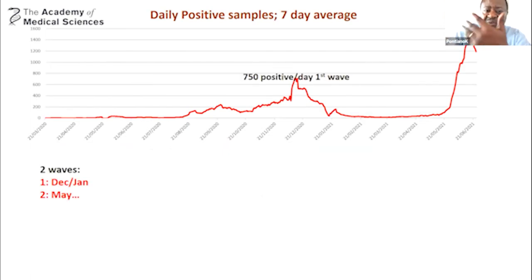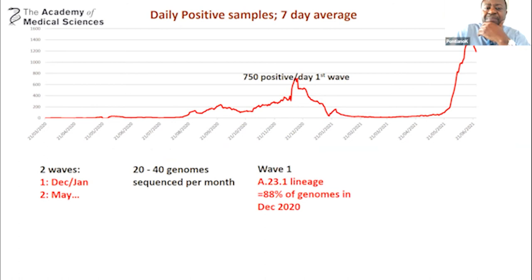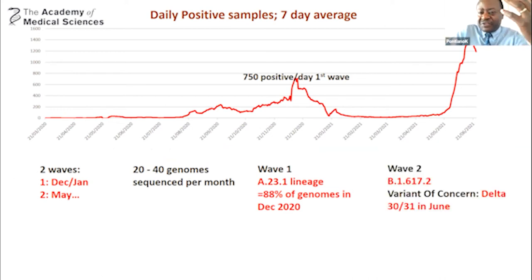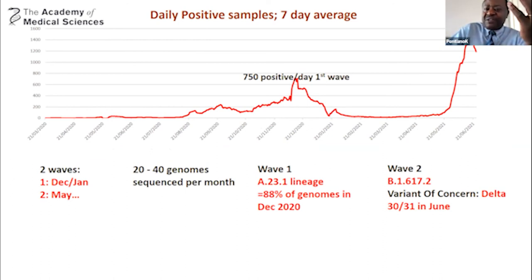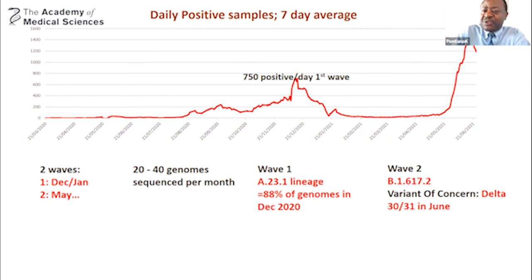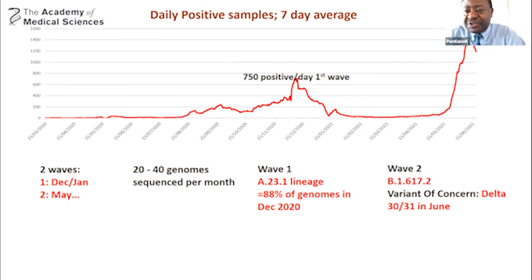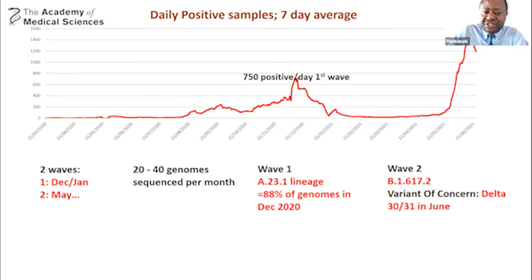In the second wave, we have been sequencing since the first wave, providing the country with about 20 to 40 genome sequences per month, and we are increasing that. In the first wave we had the A23.1 lineage. Now in the second wave, we are again seeing an increase of variants of concern and interest — alpha, beta — but in the last sequences, we are beginning to see a dominance of the delta variant. This is also the picture in South Africa, where they are seeing a third wave dominated by delta. These highly transmissible variants are coming on.